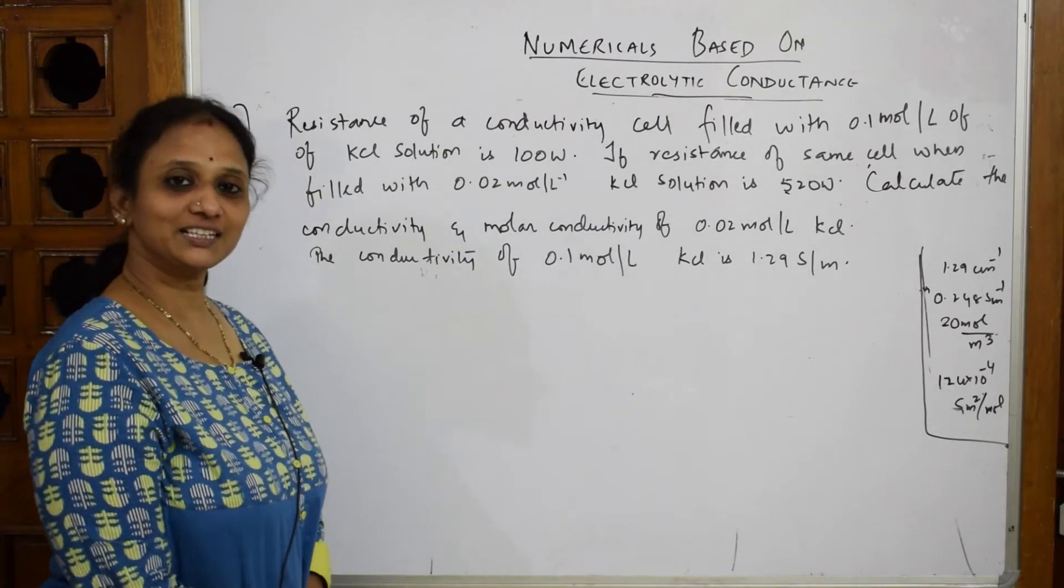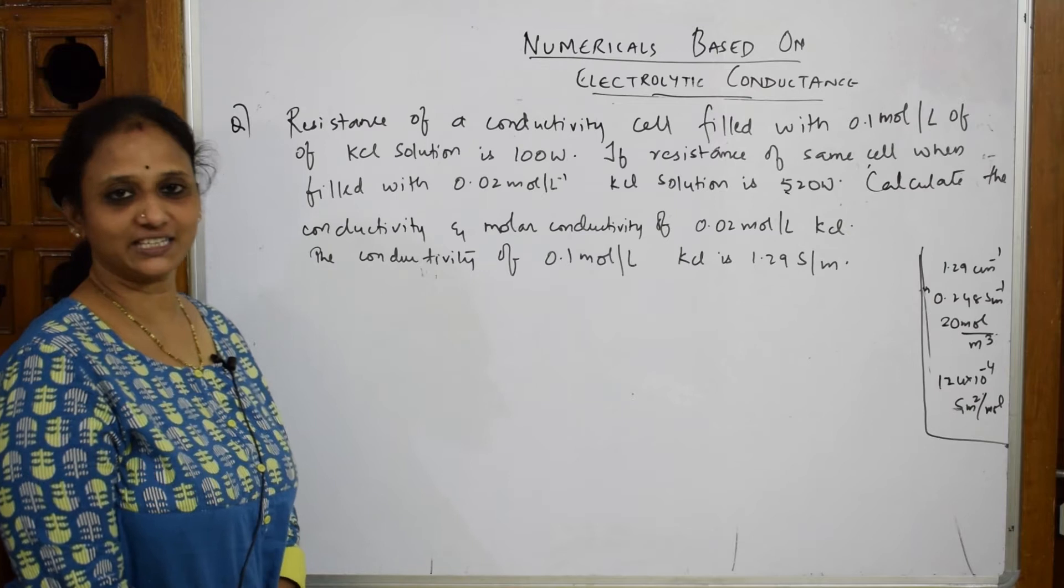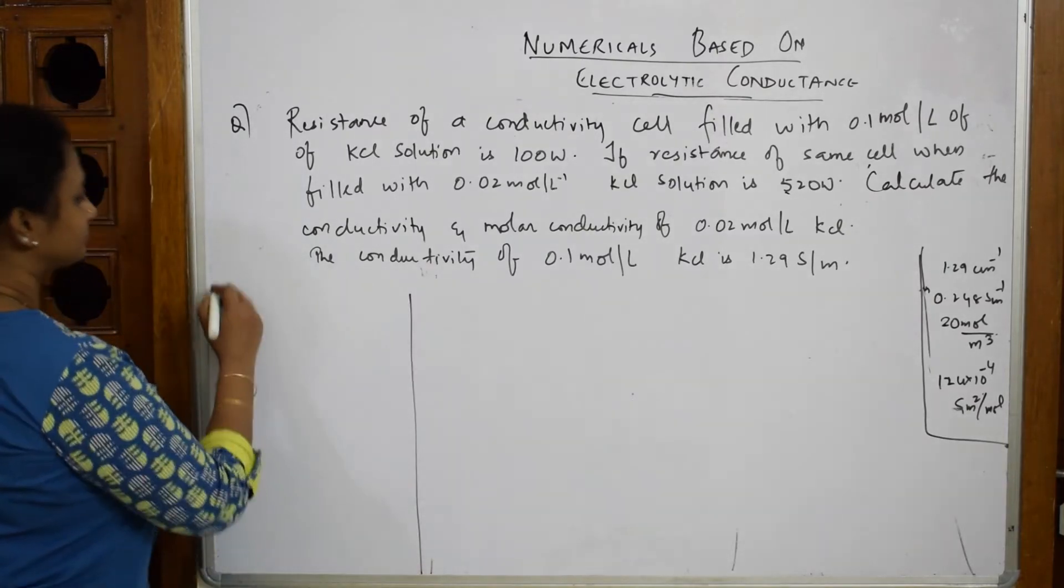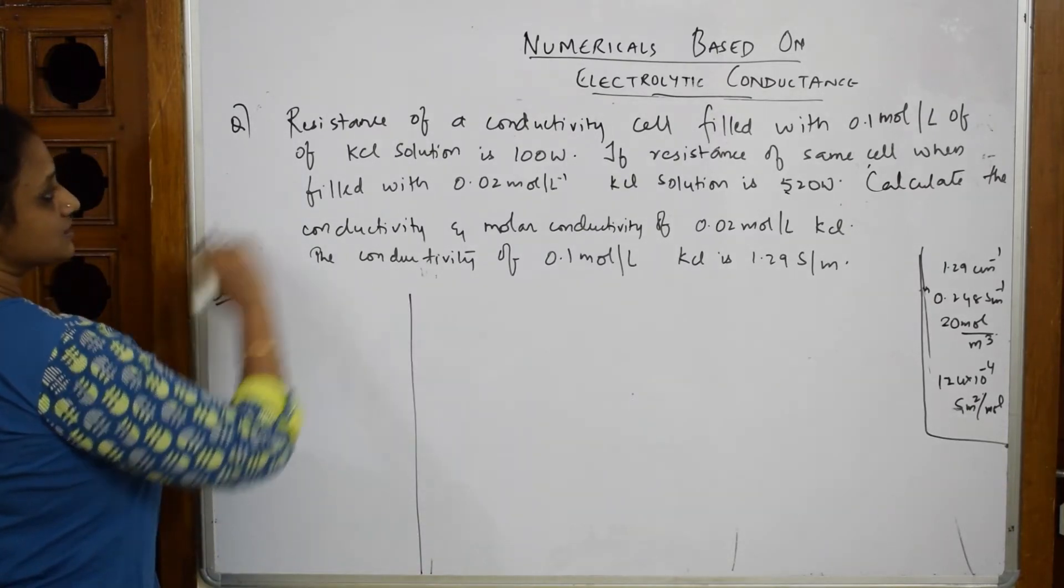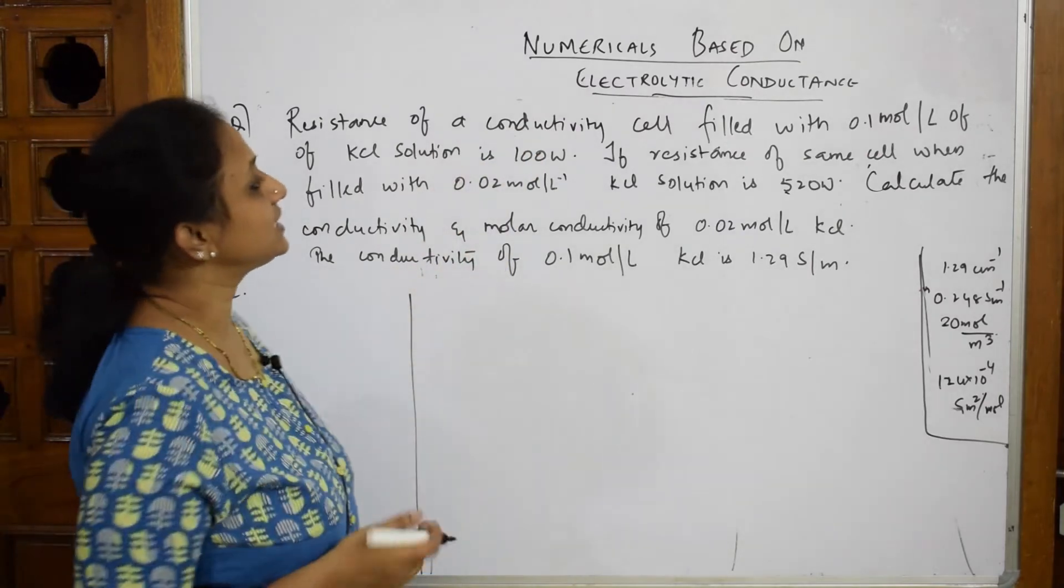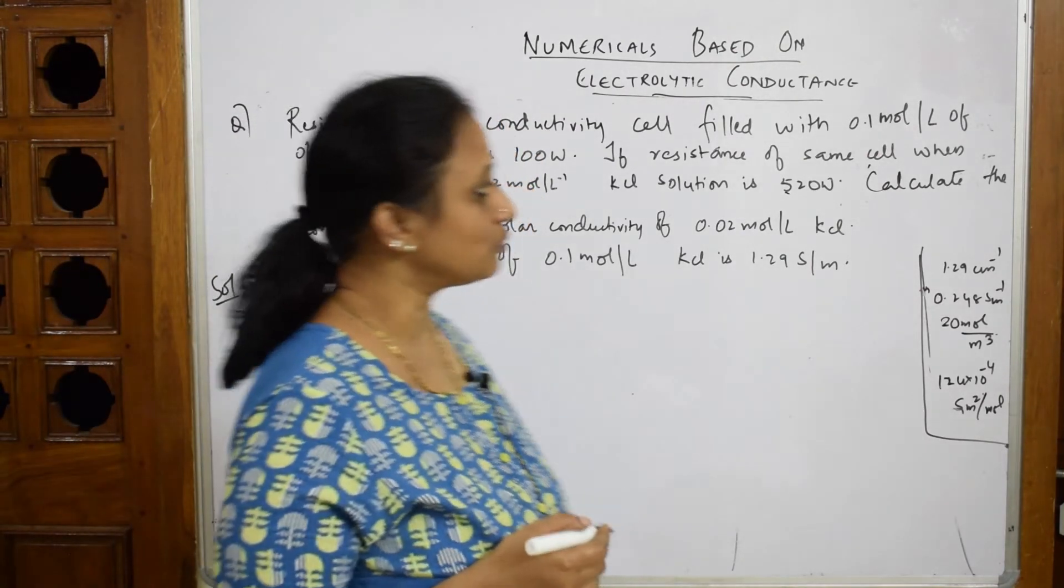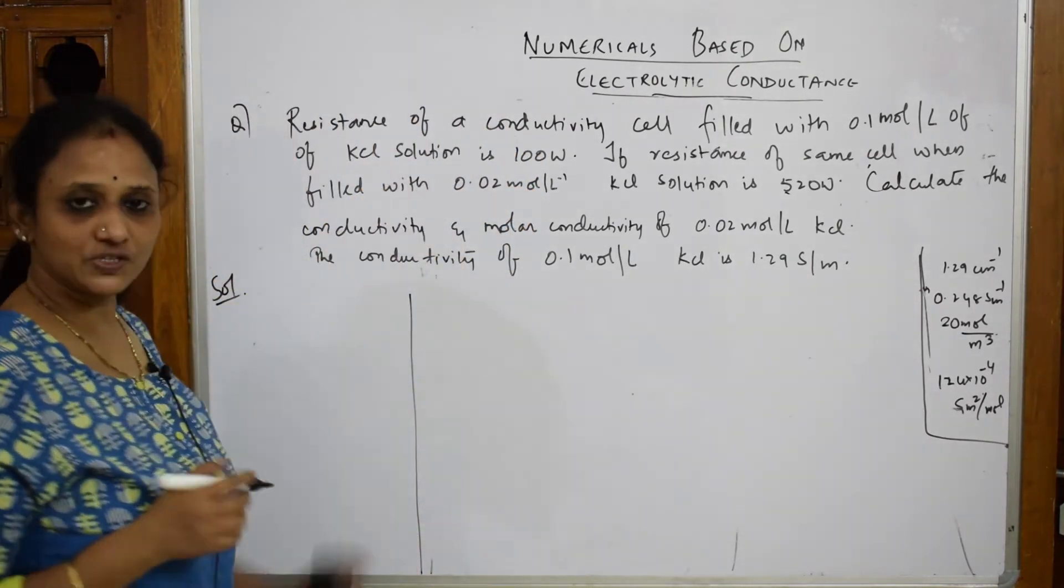Let's come back and solve this numerical problem. The question states: resistance of a conductivity cell filled with 0.1 molar KCl solution is 100 ohms.